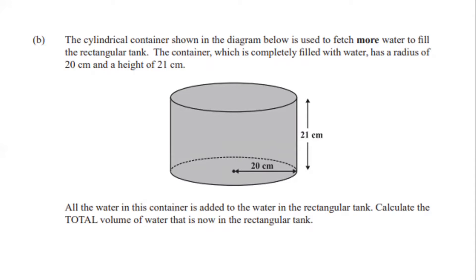We're calculating the total volume of water now in the rectangular tank. First, we have to calculate the volume of water in this cylindrical container. The volume of a cylinder equals pi r² multiplied by height.